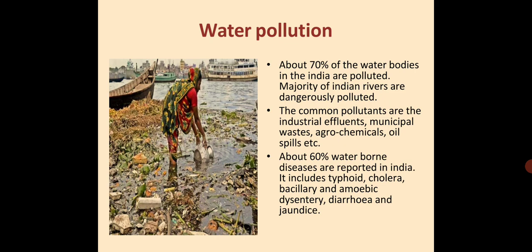About 70% of the water bodies in India are polluted and majority of Indian rivers are dangerously polluted. The common pollutants are industrial effluents, municipality waste, agrochemicals, oil spills, etc. About 60% of waterborne diseases are reported in India, including typhoid, cholera, bacillus and amoebic dysentery, diarrhea and jaundice.